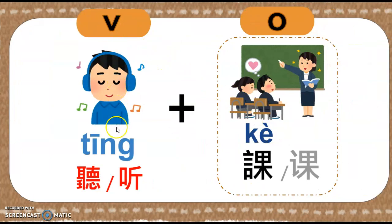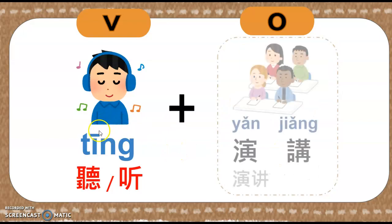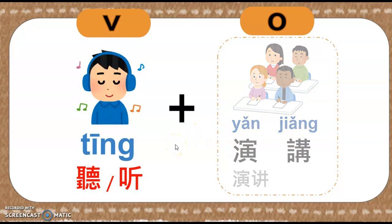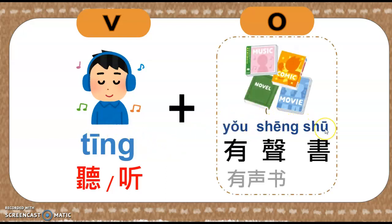Okay, now we have verb 听 and object 客. So let's put them together to see how it goes. 听客, 听客. 听演讲. 听有声书, 听有声书, 听有声书。